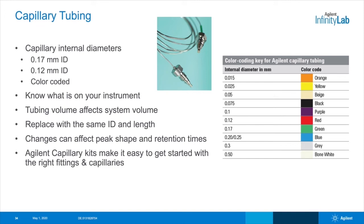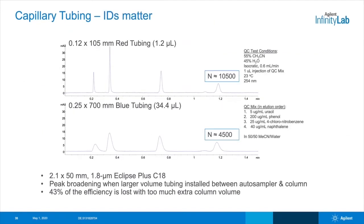It is important to know what is on your instrument. When replacing a blocked, leaking, or broken piece of tubing, be sure to replace with the same internal diameter and length. The volume of the tubing affects the system volume, which in turn can affect peak shapes and retention times. The ID and the length of the tubing you use really matters. You want to make sure you do not inadvertently increase the volume of your LC system. The two chromatograms here demonstrate the effect of increased tubing volume on a separation — we can see significant peak broadening when larger volume tubing is installed between the auto sampler and the column.